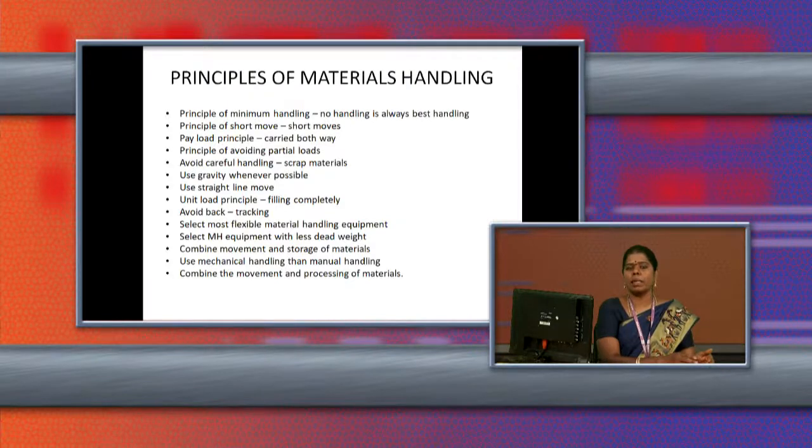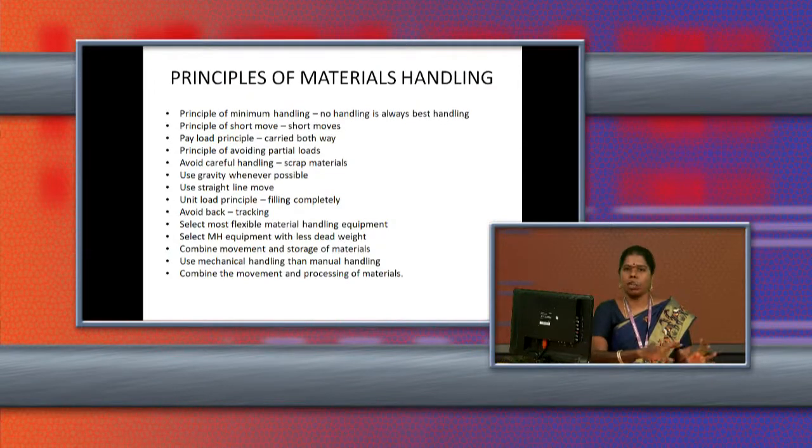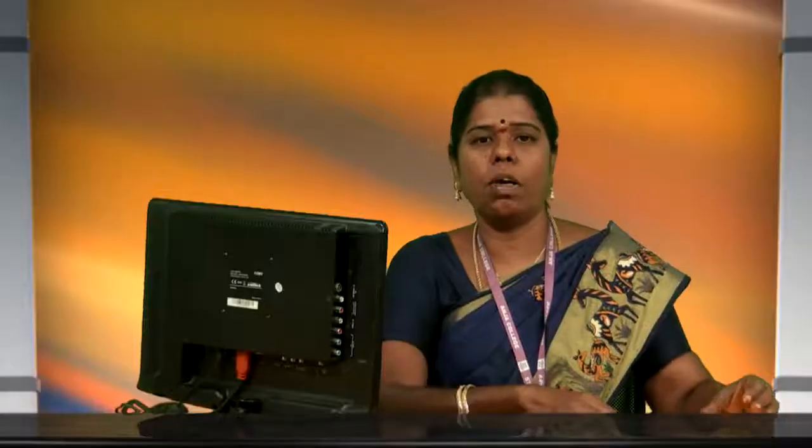The next principle is to combine movement and storage of material. Sometimes the lorry bringing raw material will be asked to wait in the manufacturing area until the next day, rather than moving the raw material to the godown. For example, in Japan, they do not have much space to store raw material, so the raw material arrives at the manufacturing area in the morning and the manufacturing process starts by taking material directly from the lorry.